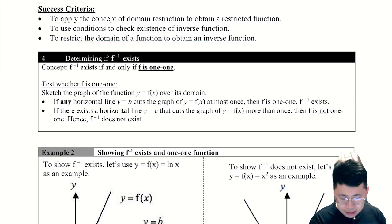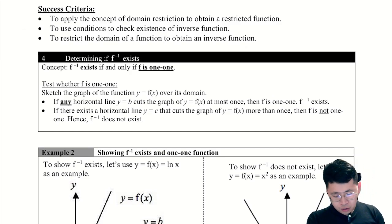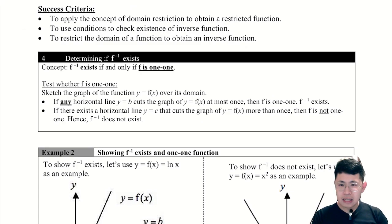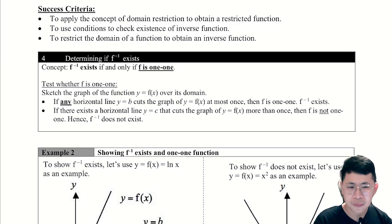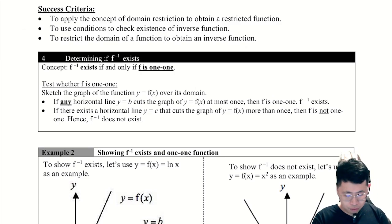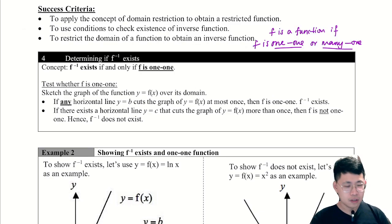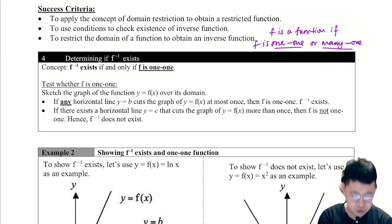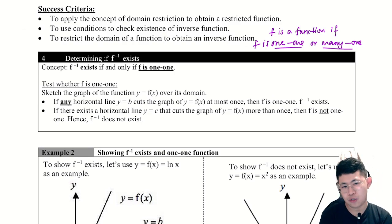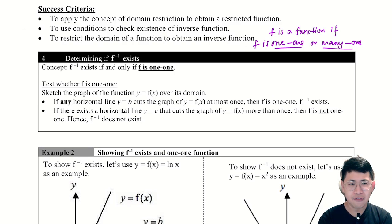F inverse exists if and only if f is a one-to-one relation. For f to be a function, f must be one-to-one or a many-to-one relation. The issue arises when f is many-to-one.